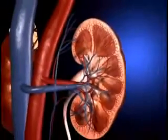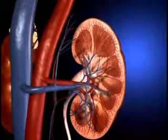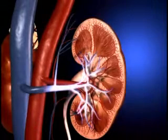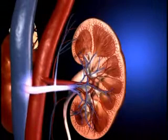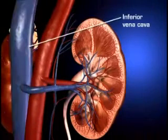The peritubular capillaries rejoin to form the venous channels by which blood leaves the kidneys and empties into the inferior vena cava.